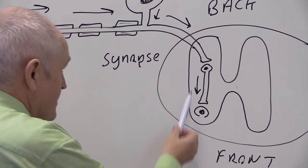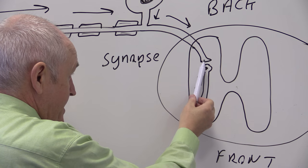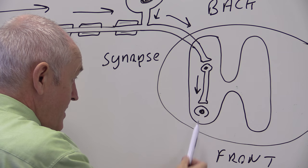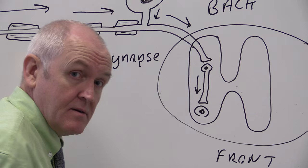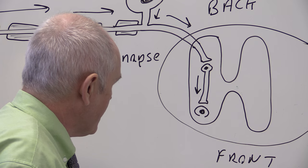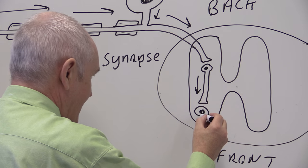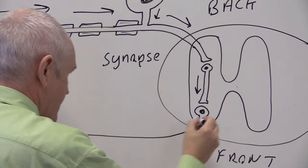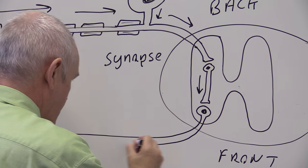So that synaptic gap is transmitted by chemical transmitter. That synaptic gap, the impulse is transmitted again by chemical transmitter. And then the axon of the motor neuron leaves the spinal cord.